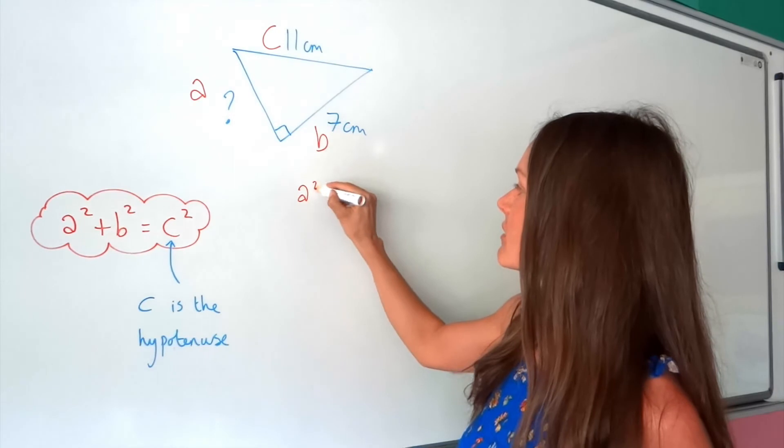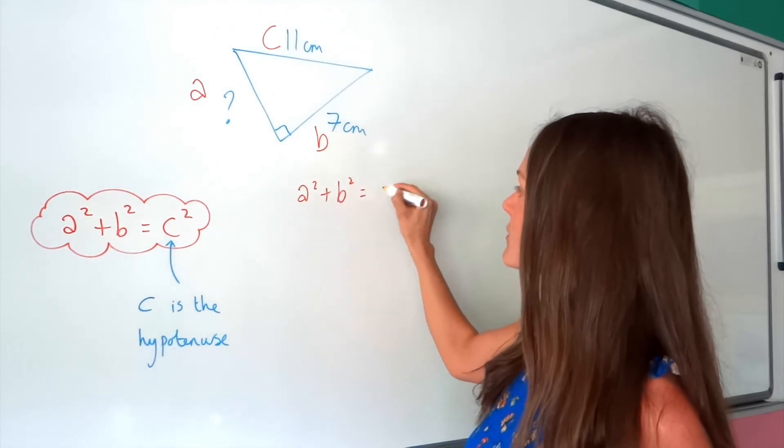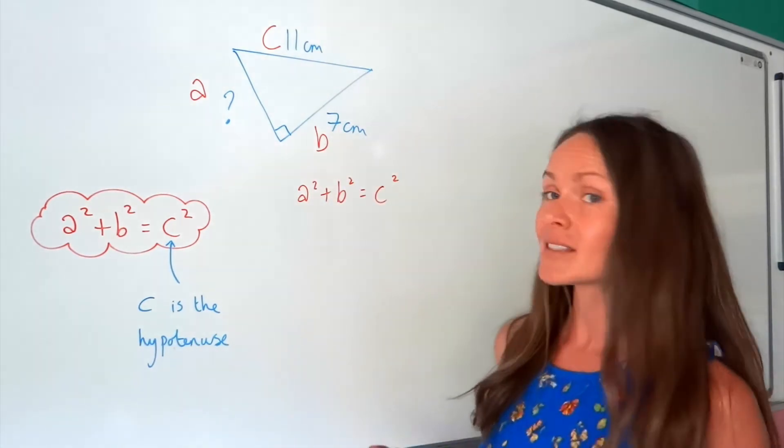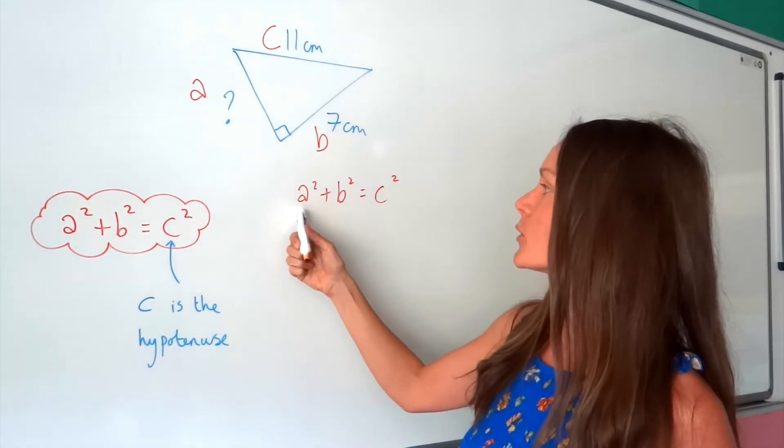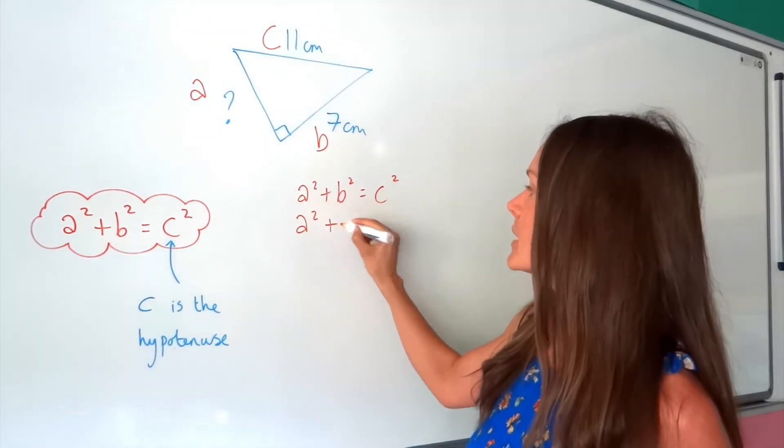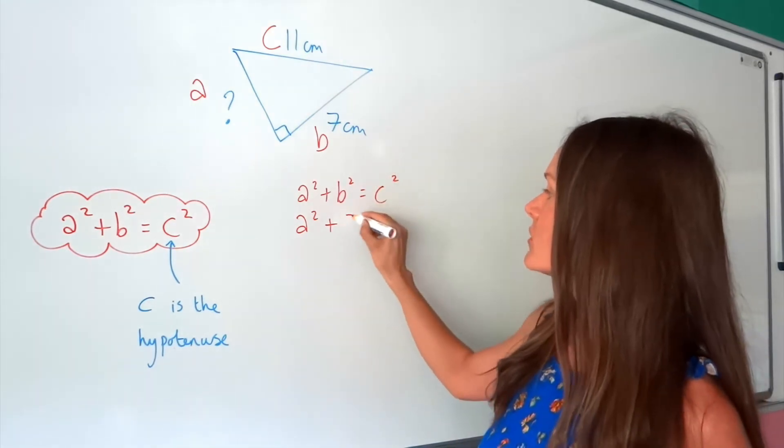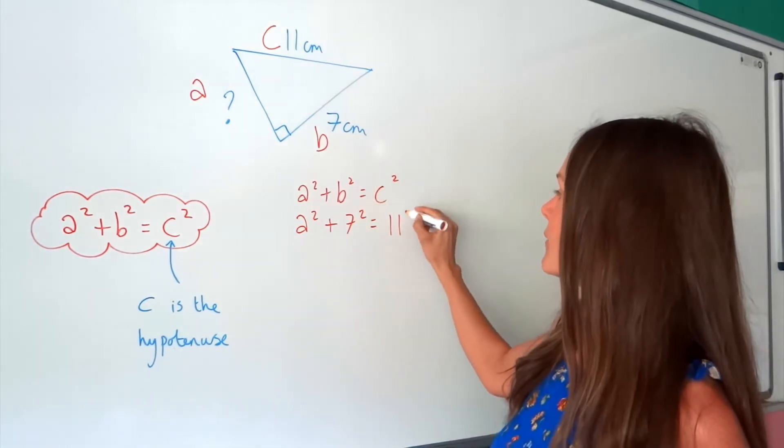Then write down Pythagoras' theorem. It's always good to show your working out, so write that down. Then substitute in the sides that you know. So A, we don't know, so that one stays the same. B, we do know, it's 7, so I can write 7 squared. And C is 11.